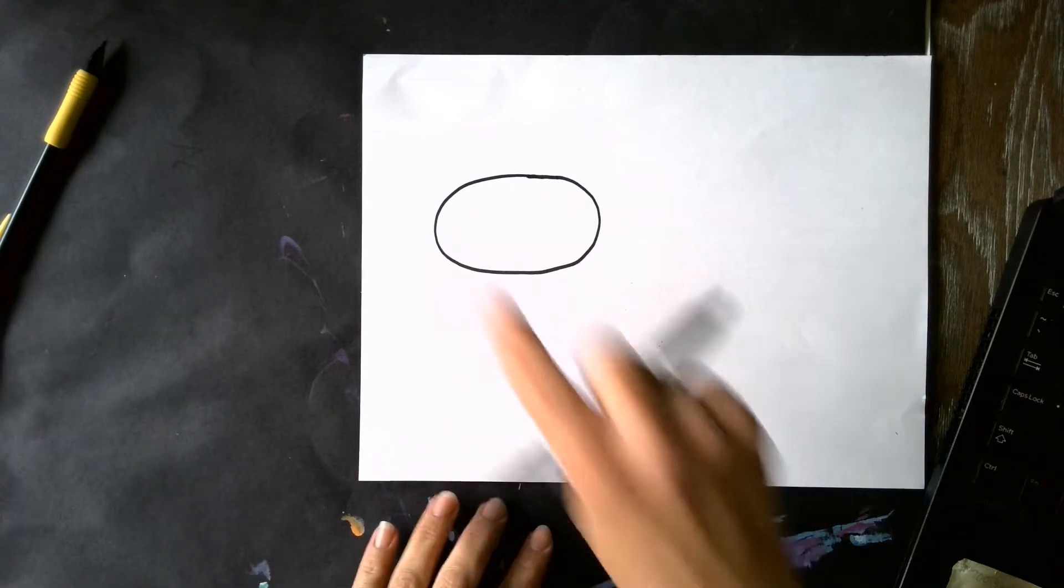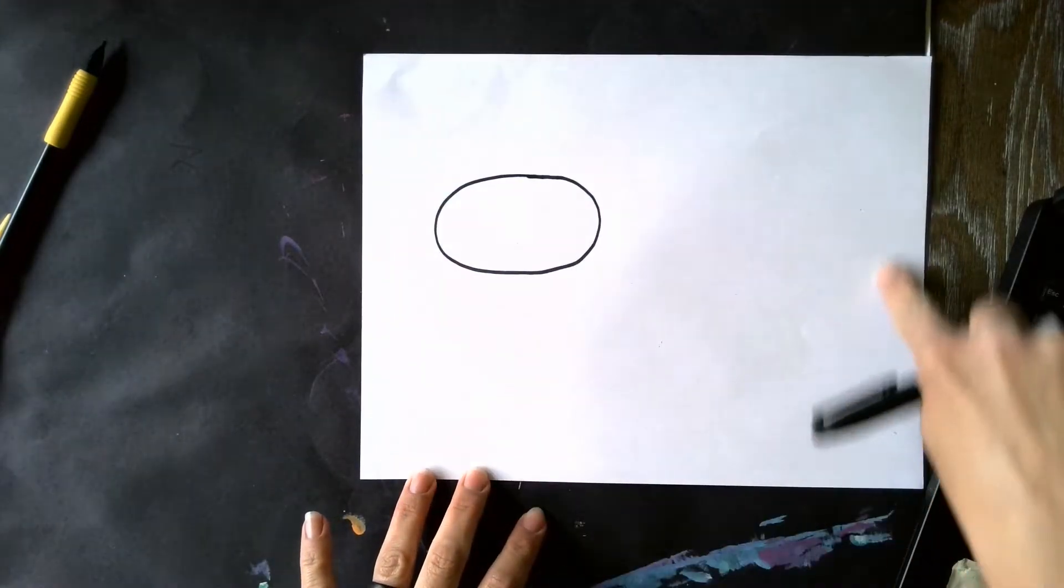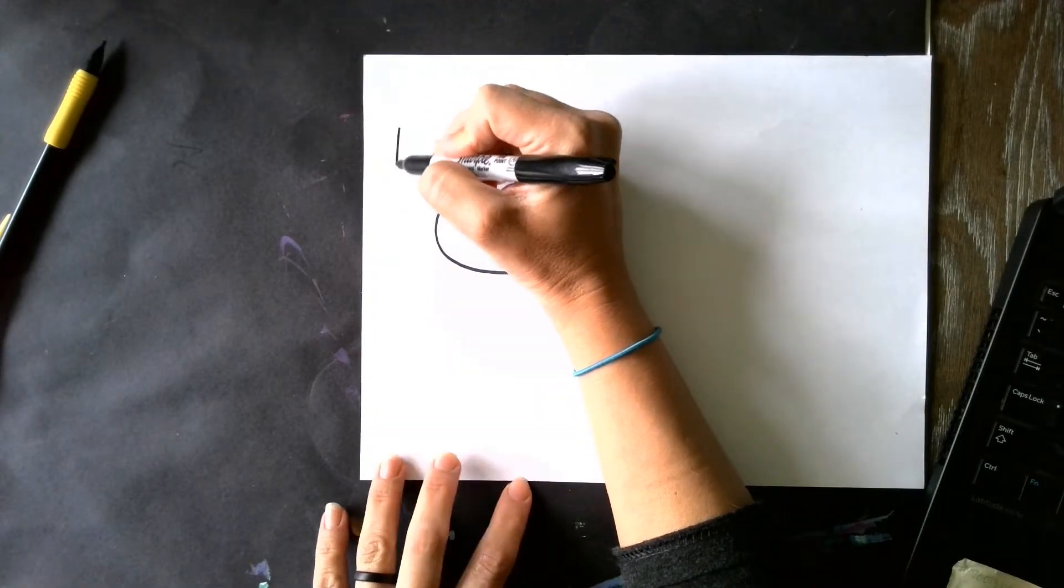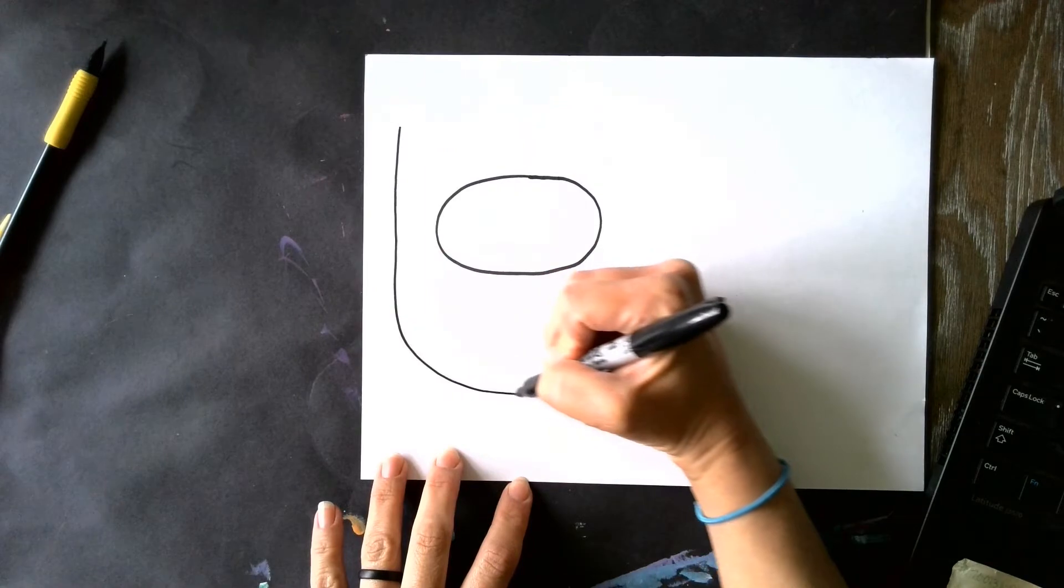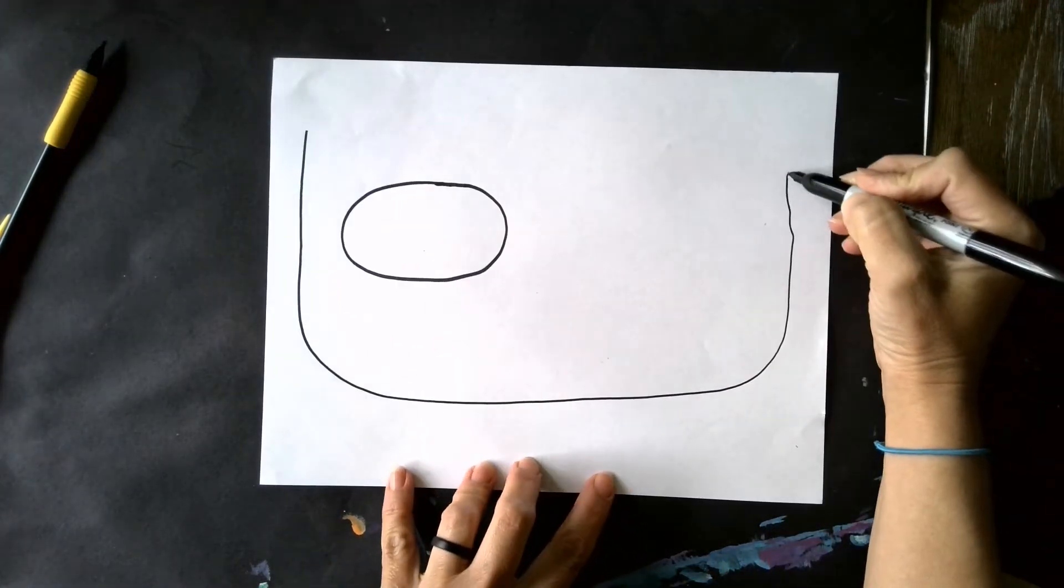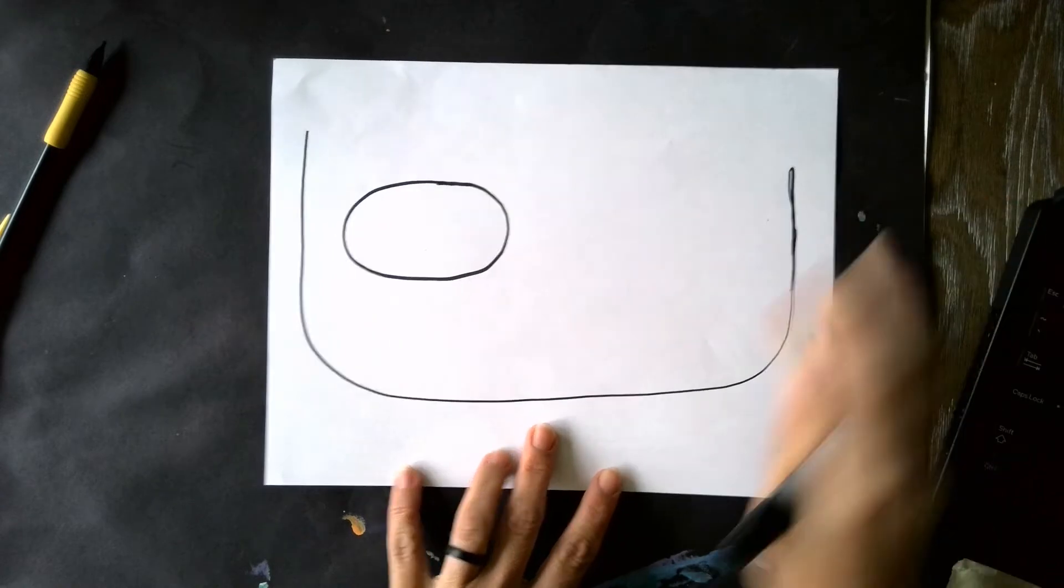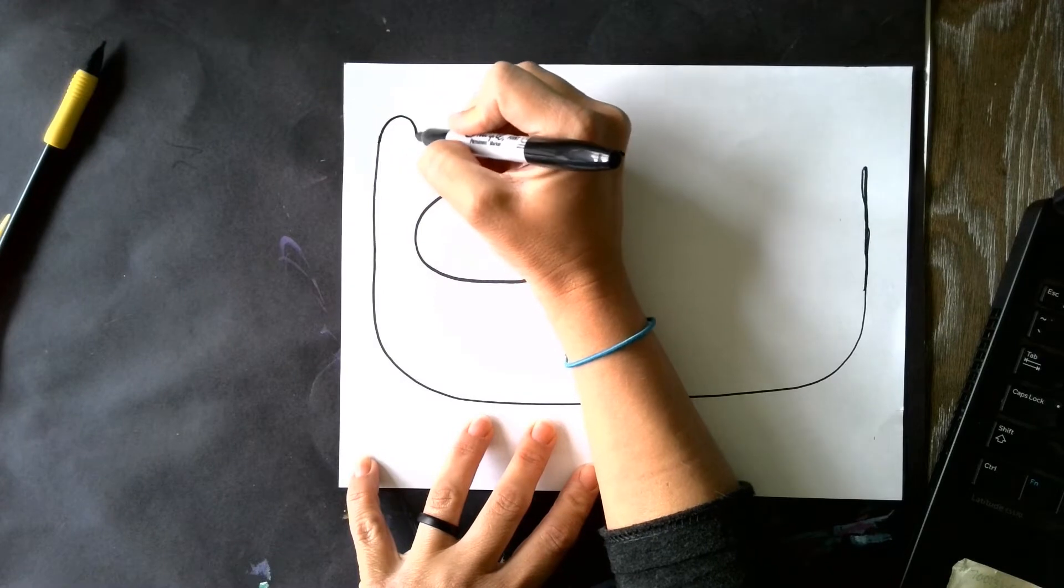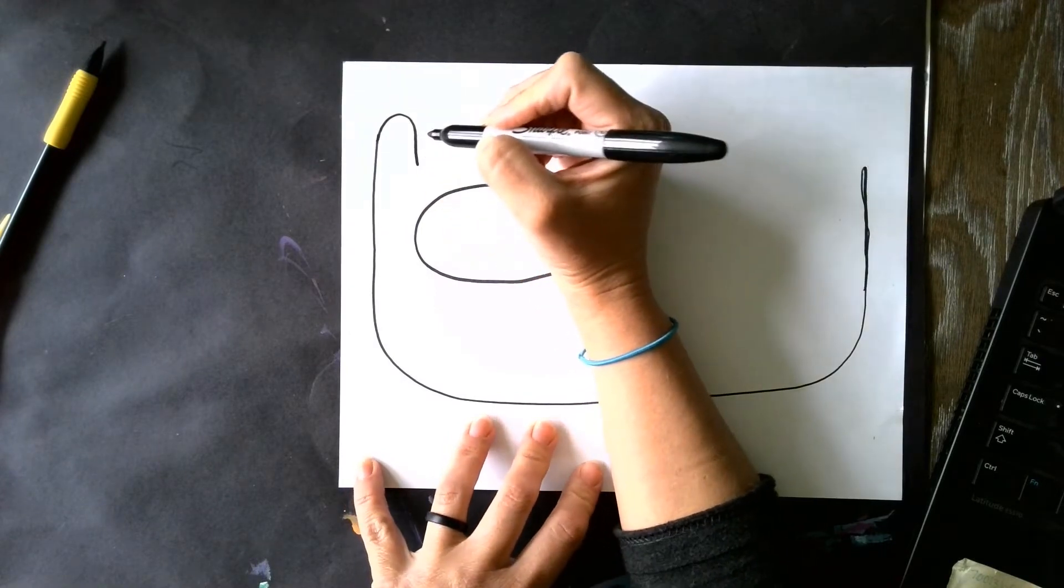So the next thing that I'm going to do is I'm going to start with the outside of his body. So I'm going to have this arm not quite go all the way to the top. All the way down like that. And then I'm going to start kind of connecting these. So this is going to be this front paw.